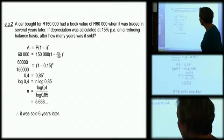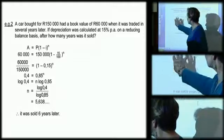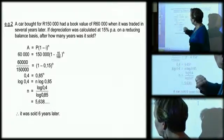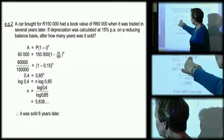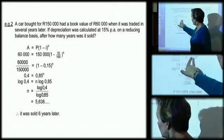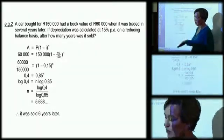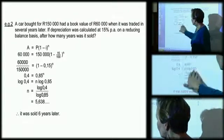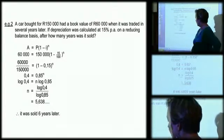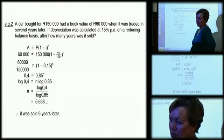So again, it's the same thing. You always divide A by P to get your bracket on its own. You simplify your bracket, find the logs at both sides, bring n down. You can also cut out a few steps, get n on its own, you divide the logs and then you round it off and it was sold about six years later.